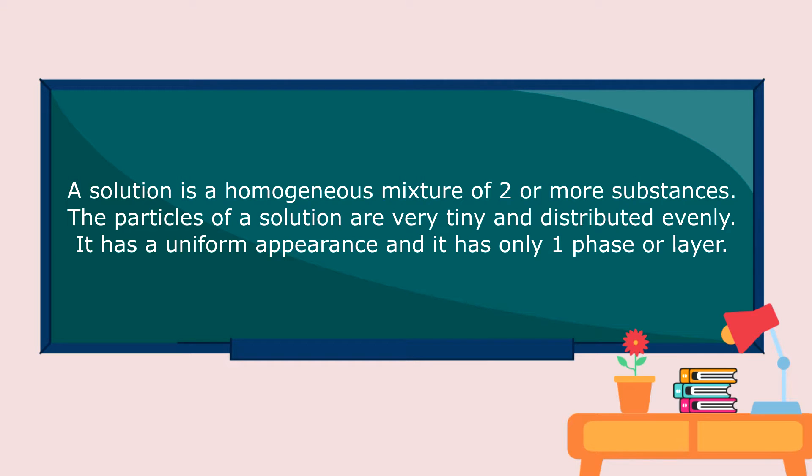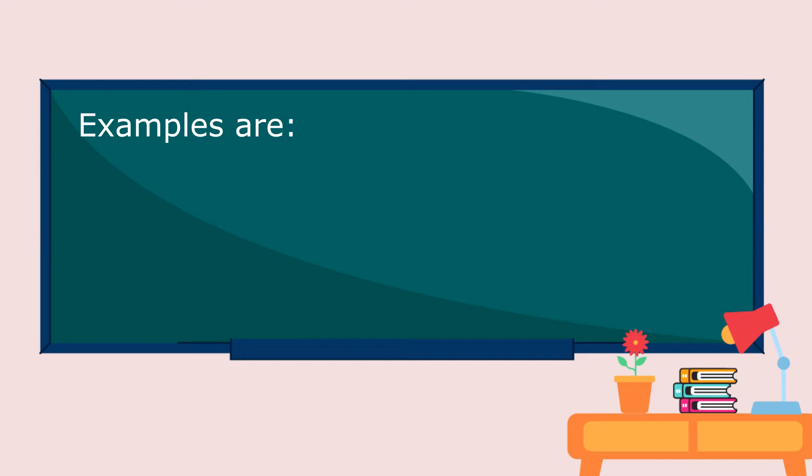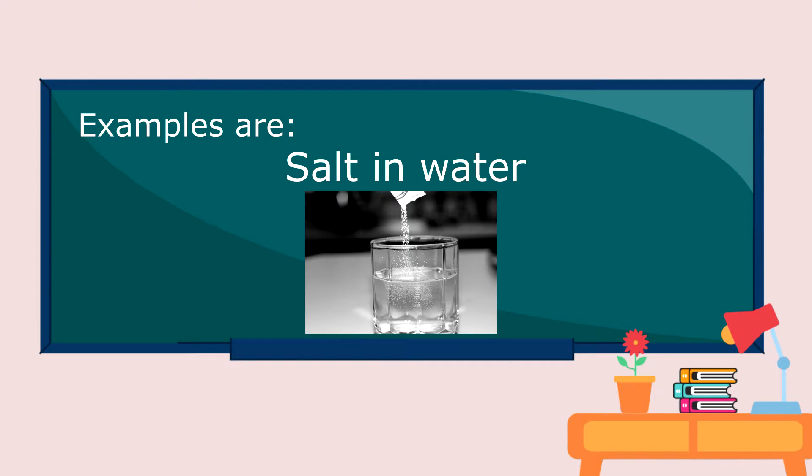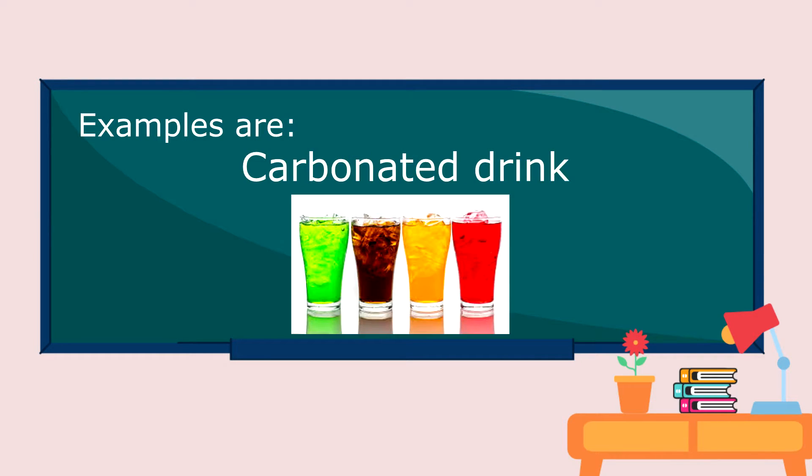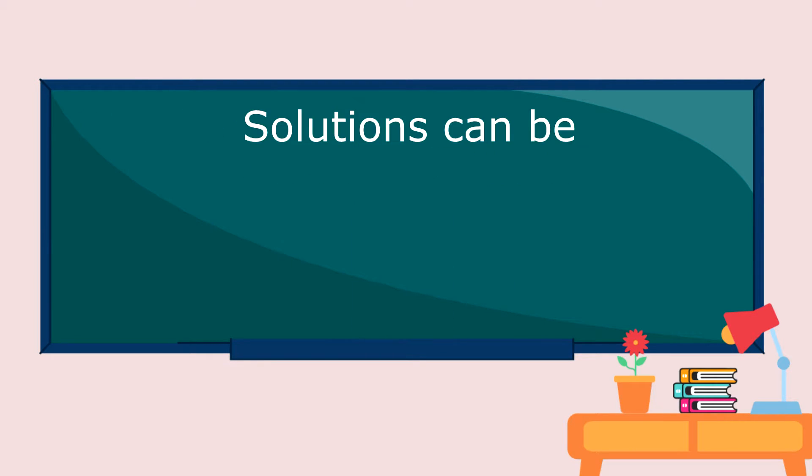A solution is a homogeneous mixture of two or more substances. The particles of a solution are very tiny and distributed evenly. It has a uniform appearance, and it has only one phase or layer. Examples are salt in water, sugar in water, carbonated drink, and vinegar. The solutions can be solid, liquid, or gas.